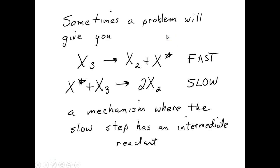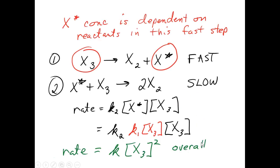Sometimes a problem will give you a mechanism where the slow step contains an intermediate. We usually don't put intermediates in the empirical rate law, because we can't measure the concentration of an intermediate. So what we do in this case is replace the intermediate with the things that made it. Instead of putting x* in my overall rate law, I ask: where did x* come from? It depends on the concentration of x3. So my overall rate law for the slow step becomes k2 times x* times x3, and I replace x* with x3.